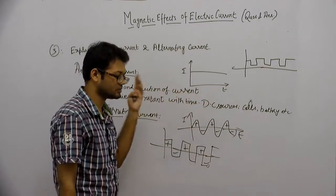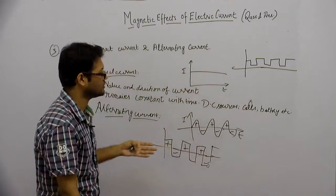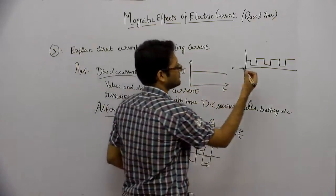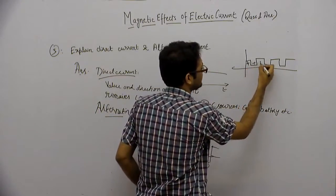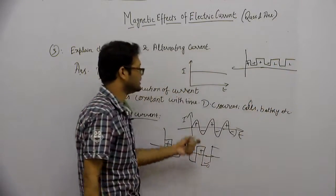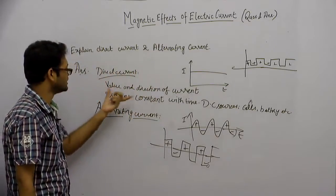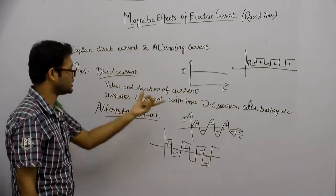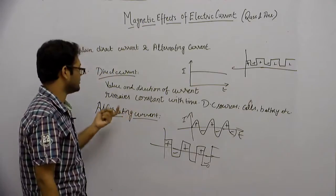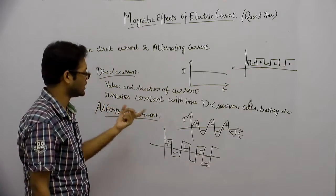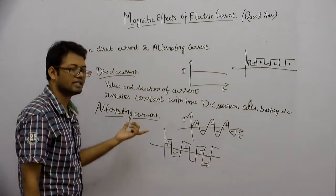Alternating current की definition के हिसाब से direction periodically change होना चाहिए। T by 2 में plus होना चाहिए, T by 2 में minus होना चाहिए। यहाँ पर हर जगह plus है, इसलिए इसको हम alternating current नहीं कह सकते। Direct current की definition: value and direction of current remains constant with time. Alternating current में: the direction of current changes periodically with time, then that current is called alternating current।